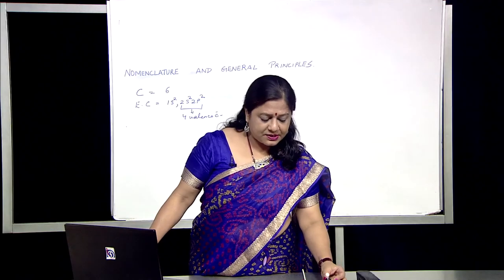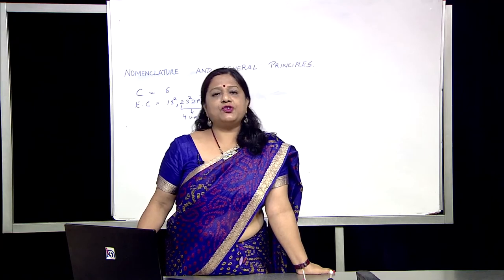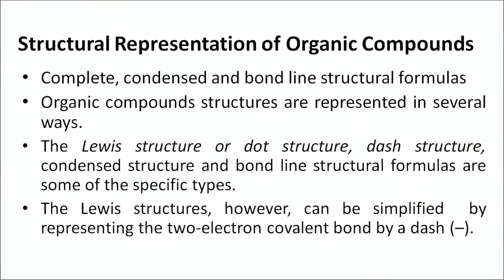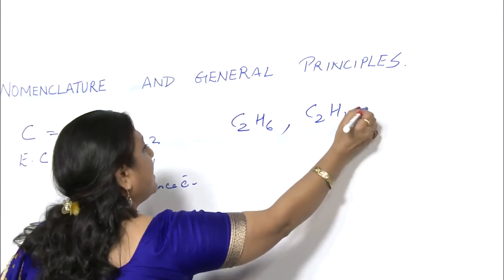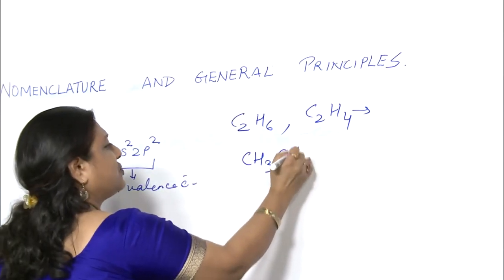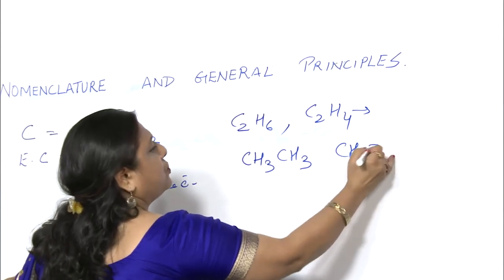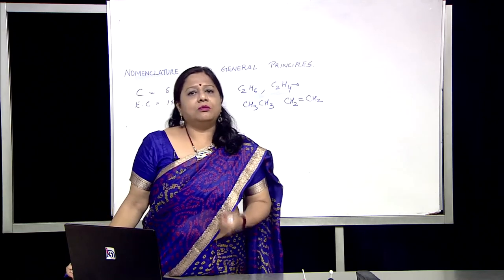Let us see how you can represent an organic compound. The structural representation of organic compounds can be in complete, condensed, and bond line structures. From your previous knowledge, you know that the Lewis dot structure is the simplest way to represent a certain atom or molecule. You can also represent as C2H6 or C2H4 — this is the condensed formula. You can also write the structure as CH3-CH3 or CH2=CH2. All these are ways of representing the structures of organic molecules.